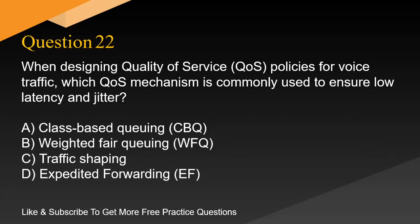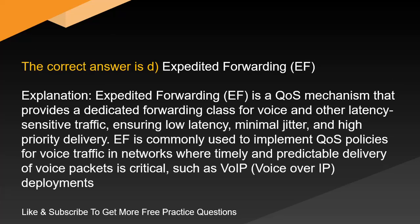Question 22. When designing quality-of-service, QoS, policies for voice traffic, which QoS mechanism is commonly used to ensure low latency and jitter? A. Class-based queuing, CBQ. B. Weighted fair queuing, WFQ. C. Traffic shaping. D. Expedited forwarding, EF. The correct answer is D: expedited forwarding, EF. EF is a QoS mechanism that provides a dedicated forwarding class for voice and other latency-sensitive traffic, ensuring low latency, minimal jitter, and high-priority delivery. EF is commonly used to implement QoS policies for voice traffic in networks where timely and predictable delivery of voice packets is critical, such as VoIP deployments.